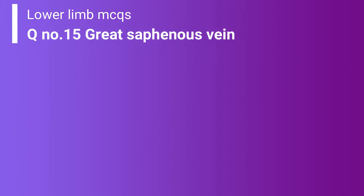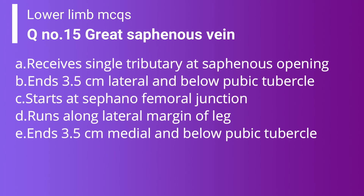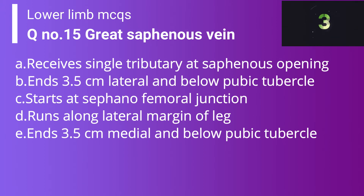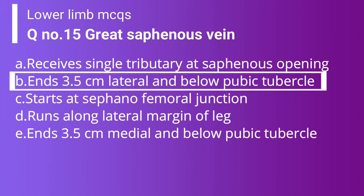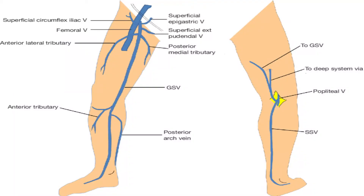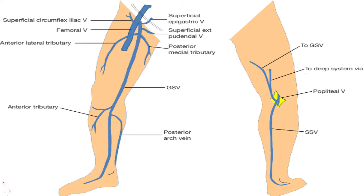Option B: ends 3.5 centimeters lateral and below the pubic tubercle. Option C: starts at the saphenofemoral junction. Option D: runs along the lateral margin of the leg. Option E: ends 3.5 centimeters medial and below the pubic tubercle. The correct answer is option B — it ends 3.5 centimeters lateral and below the pubic tubercle. The rest are false: it receives multiple tributaries at the saphenous opening, it ends at the saphenofemoral junction (not starts), and it runs along the medial margin of the leg.